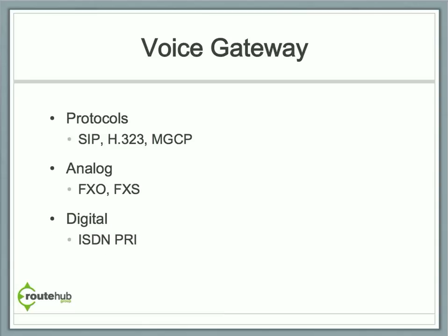A voice gateway can communicate back to the call processing component via SIP, H.323, or MGCP. It is recommended that MGCP be used for dynamic call routing throughout the PSTN. A voice gateway can also have analog or digital ports connecting to the PSTN. For analog, it could be FXO — an analog line connecting directly into a phone jack to the phone provider, associated with a DID or phone number — or FXS, used for connecting analog devices such as analog phones or fax machines. A digital line would be an ISDN PRI, which can place and receive up to 23 calls at a given time per ISDN connection.